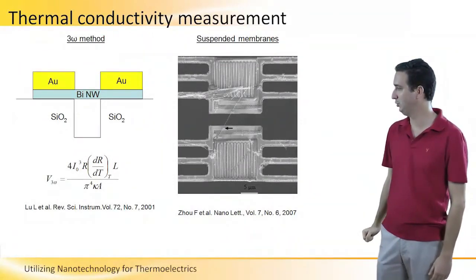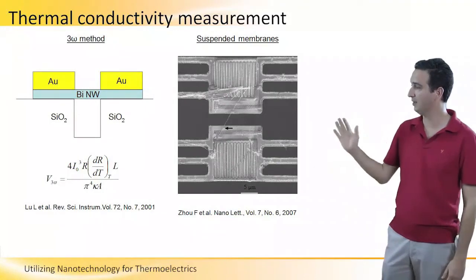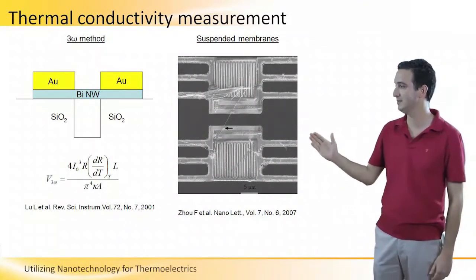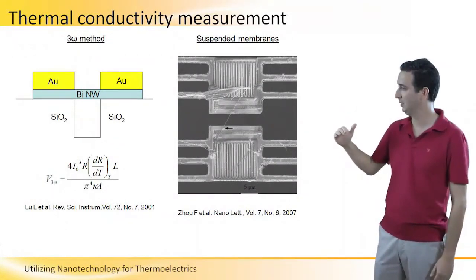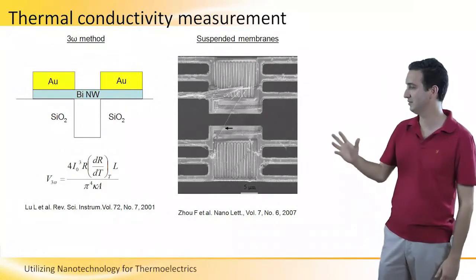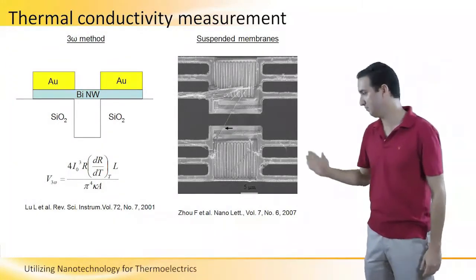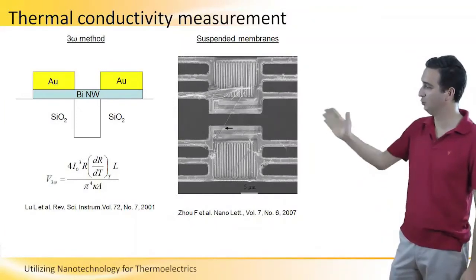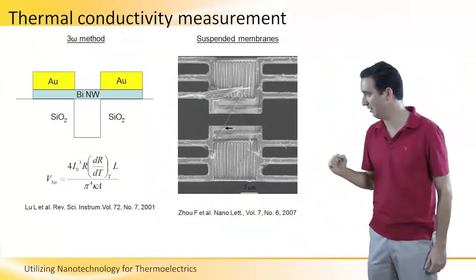In this method, you build a device in which the nanowire is suspended. So it touches the surface only at the contacts. And let's assume for now that two probes are enough here.